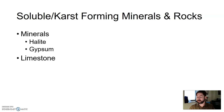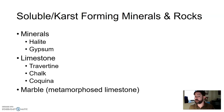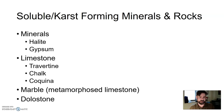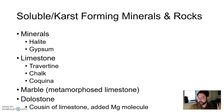Limestone is by far the most common soluble rock, including different types of limestone like travertine. Chalk is a type of limestone. Coquina is also a type of limestone. All of these are soluble rocks susceptible to carbonic acids and being dissolved away. Marble, which is metamorphosed limestone, is also soluble since limestone is its parent rock. And dolostone as well — it's like a cousin of limestone, different because it has some magnesium added to it, but it acts similarly.